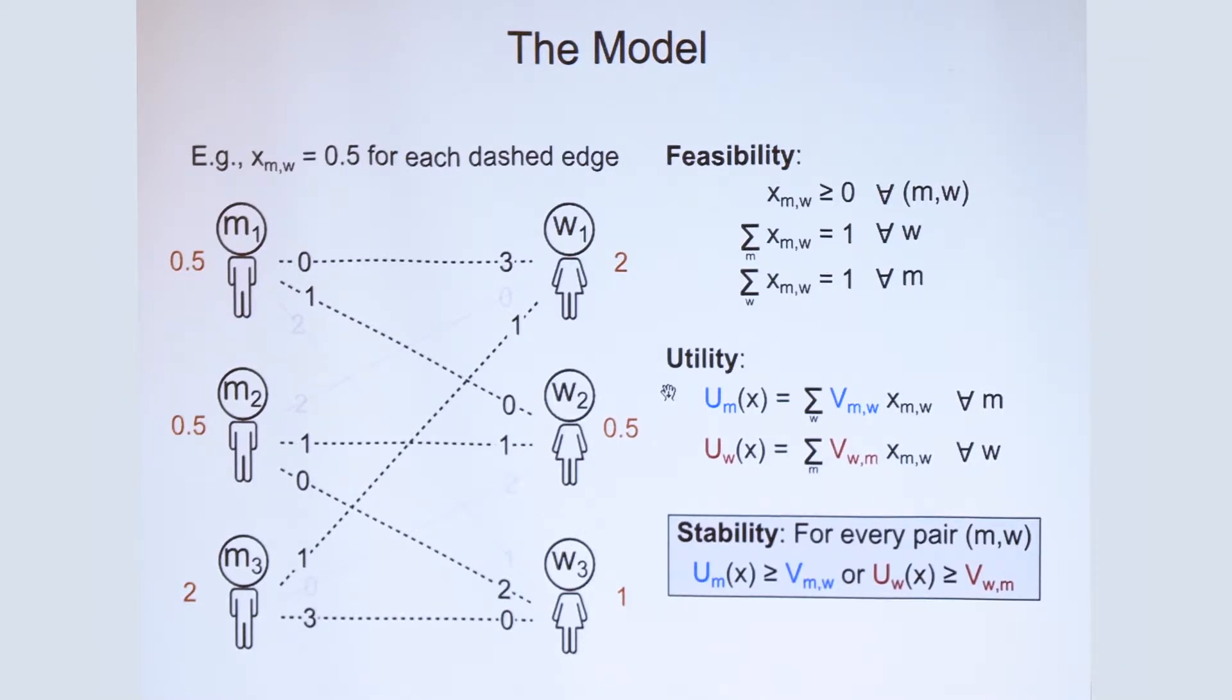And the important definition is stability, which means that for every pair of agents, at least one of the agents satisfies the utility threshold for that pair. So for every man-woman pair M and W, either the utility of the man is above his valuation of the woman, or the utility of the woman is at least her valuation for the man. At least one of these two conditions must be satisfied.